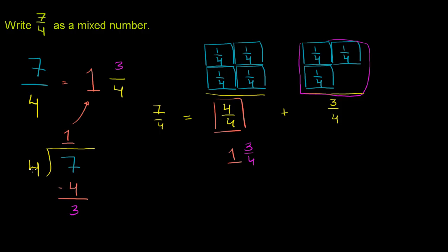When you're dividing the 4 into the 7 and getting the 1, you're essentially saying how many wholes—the number of wholes, or you can imagine the number of whole pies.